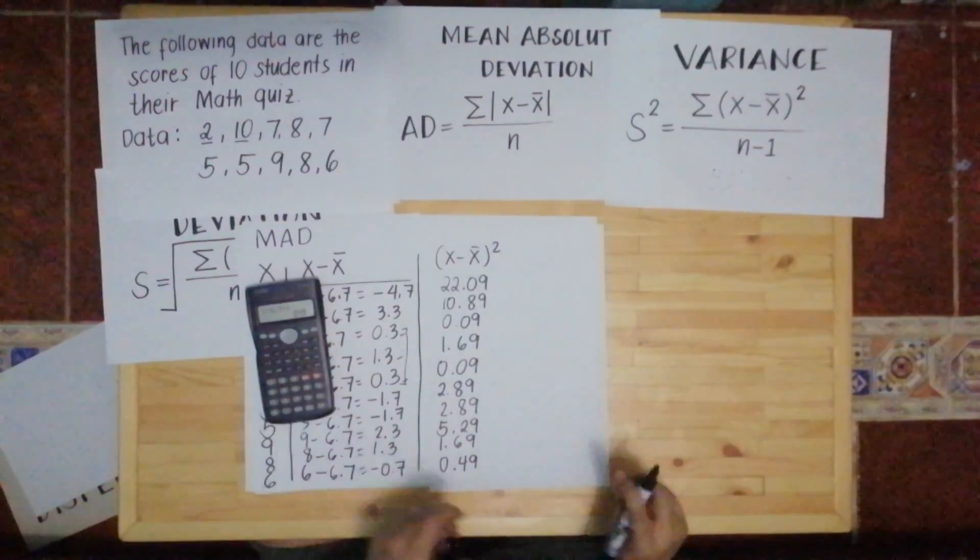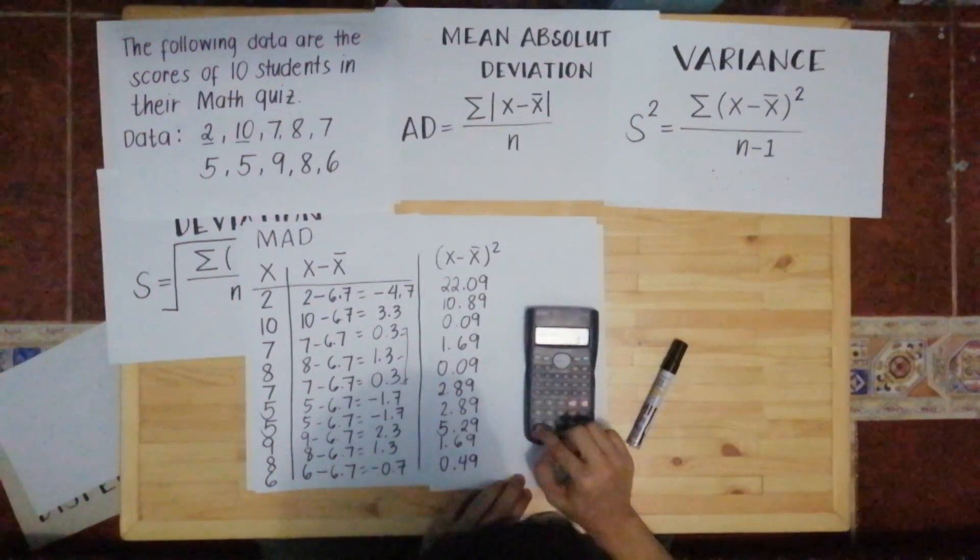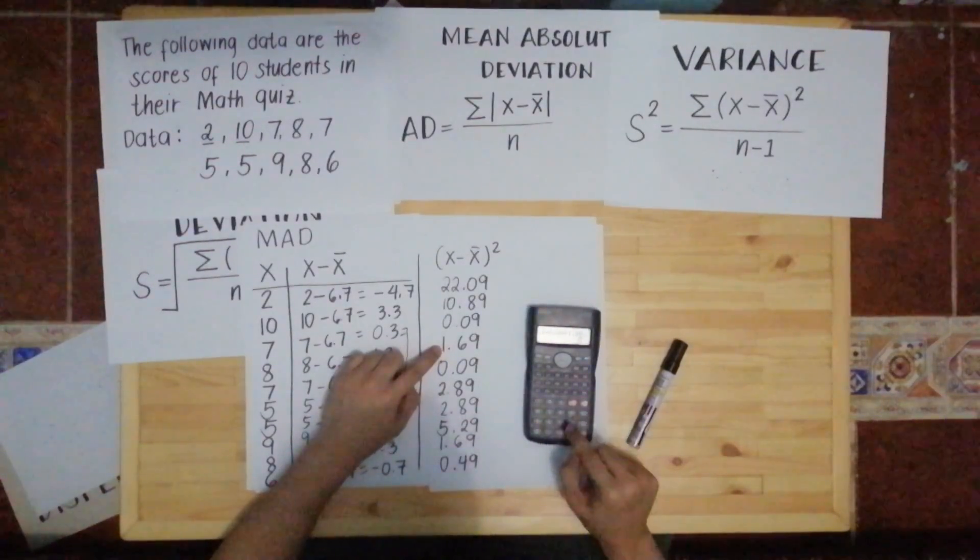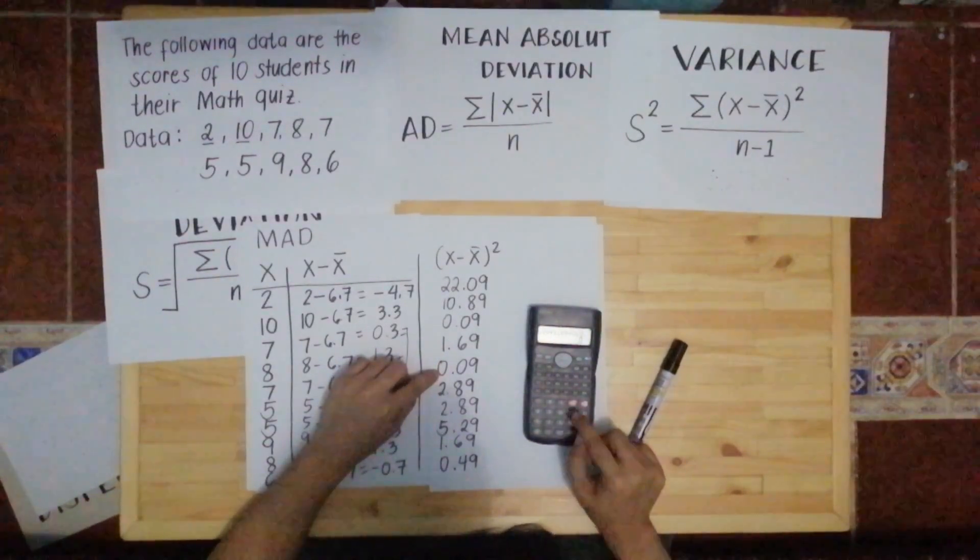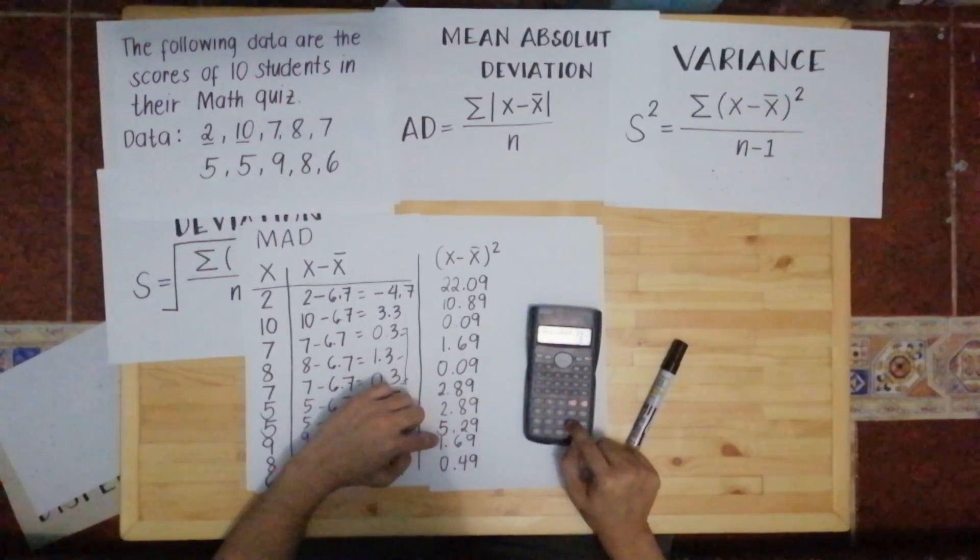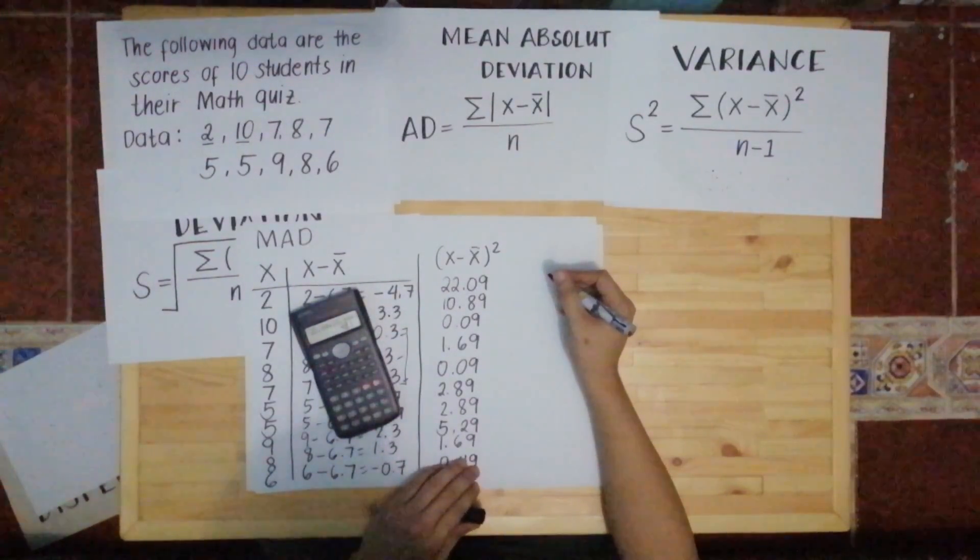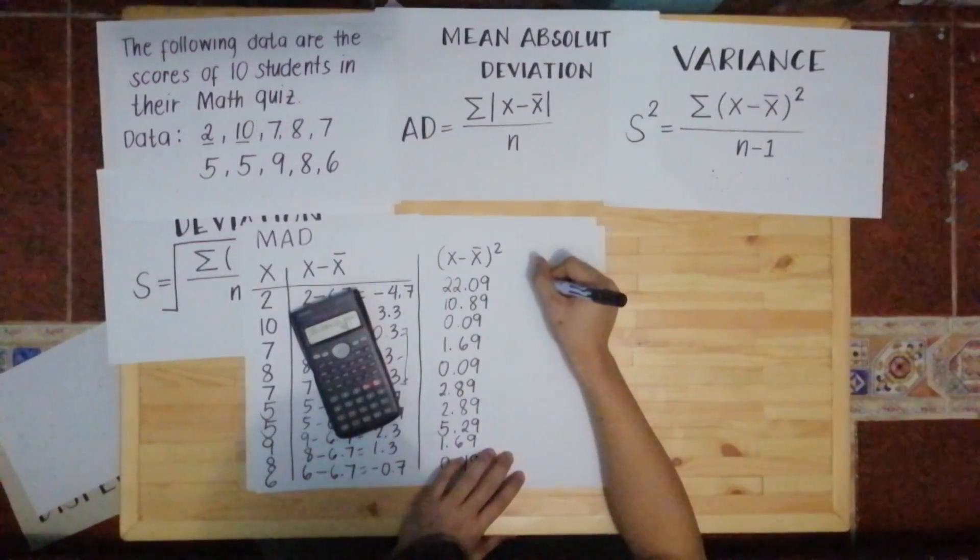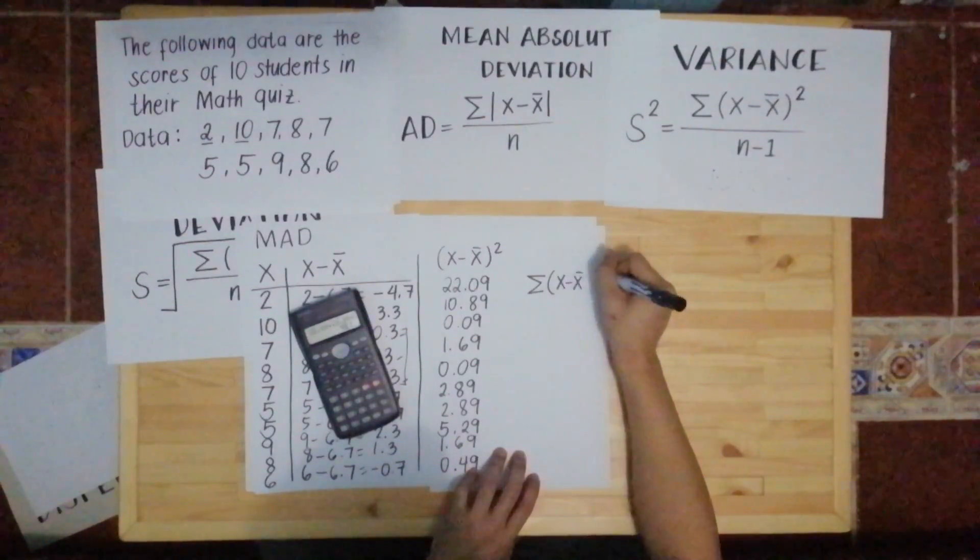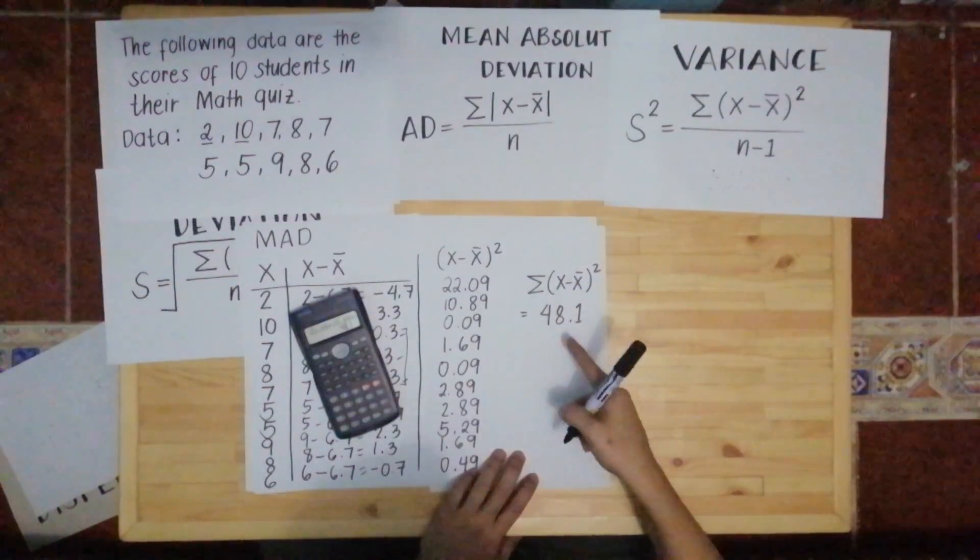After getting all the squares of X minus mean, you have to get the sum of this. So we add them one by one: 22.09 plus 10.89 plus 0.09 plus 1.69 plus 0.09 plus 2.89 plus 2.89 plus 5.29 plus 1.69, then lastly plus 0.49. Then equals, you'll get an answer of 48.1. So the total, we write summation, the total of X minus mean squared, is equal to 48.1.